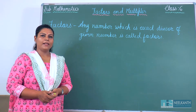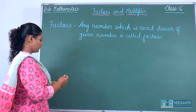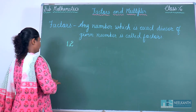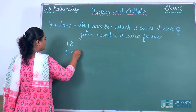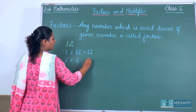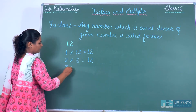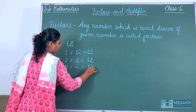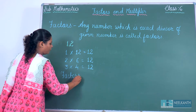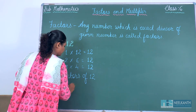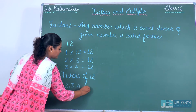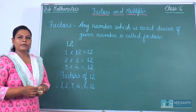Let's see one more example. Suppose we have to find the factors of 12. So the first factor is 1, and 1 times 12 is 12. Then 2 times 6 is 12. Then if we check with 3, it is also a factor of 12 — 3 fours are 12. So factors of 12 = 1, 2, 3, 4, 6 and 12.